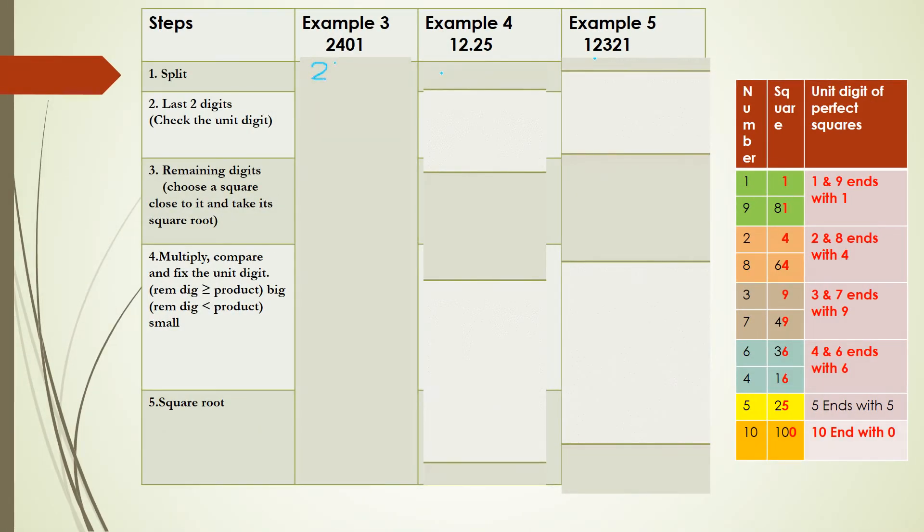First step: split it. So 2401 becomes 24 and 01 as the last two digits. Compare: 1 or 9 can be the unit digit. Next, 24 is close to the square number 16, and 16 is the square of 4.